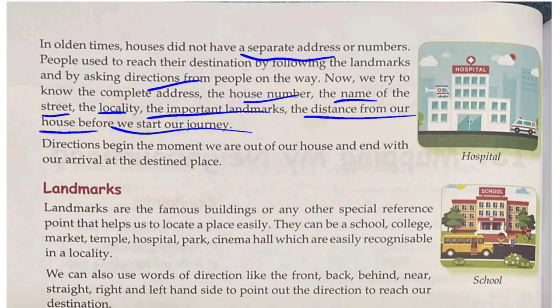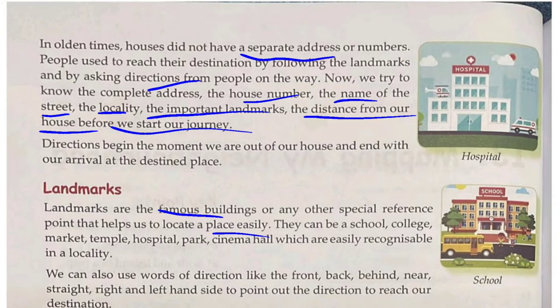Directions end with our arrival at the destined place — जो हमारा गंतव्य होता है जहां हमें पहुंचना होता है. Landmarks are famous buildings or other special reference points that help us reach a place easily. A landmark can be a school, a college, or a cinema hall which are easily recognizable in a locality.